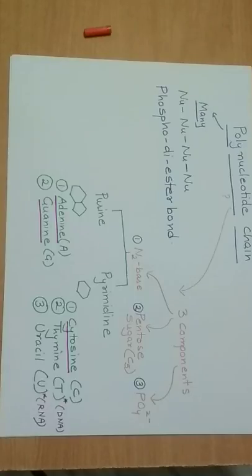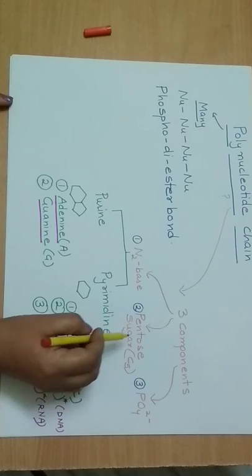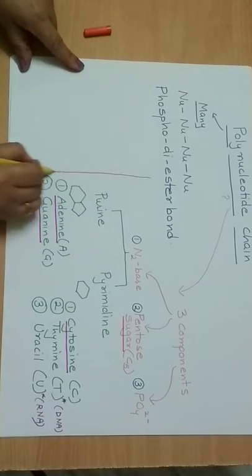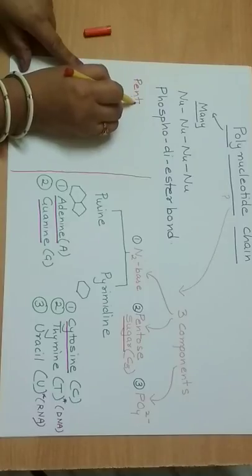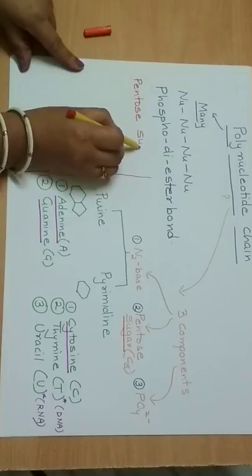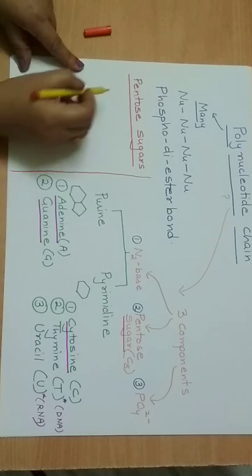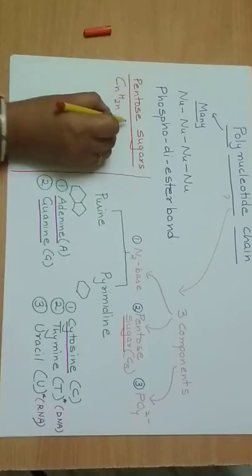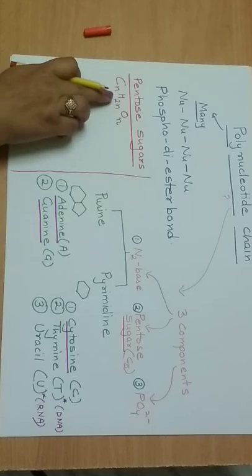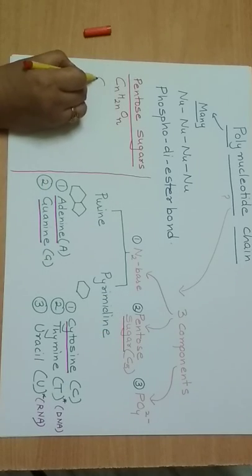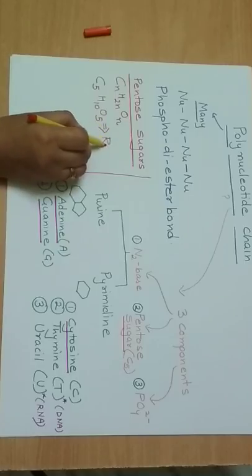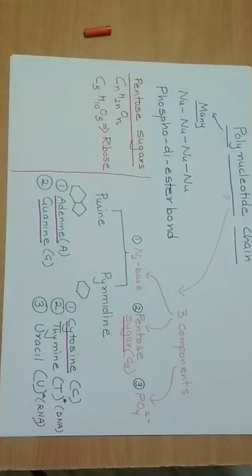The second component of a nucleotide is pentose sugar — a five-carbon sugar. There are two types of pentose sugars. The general formula for a pentose sugar is C5H10O5. This sugar is called ribose sugar.